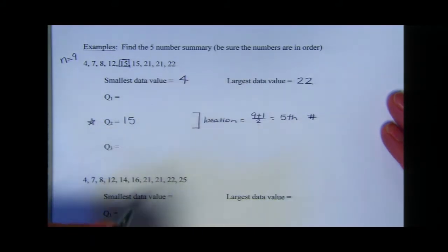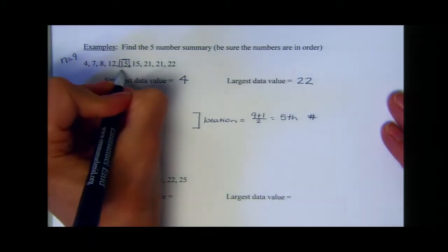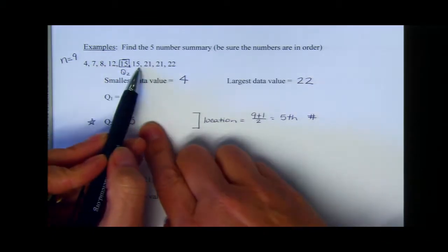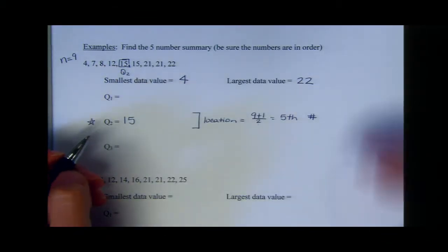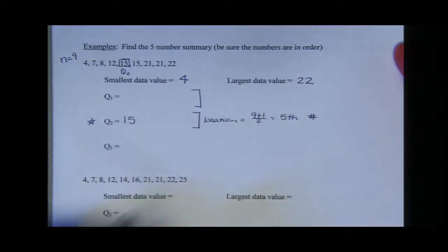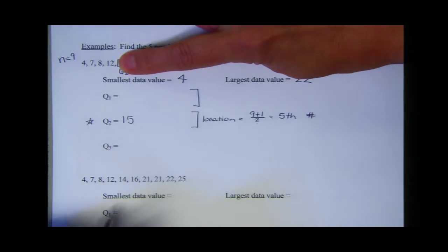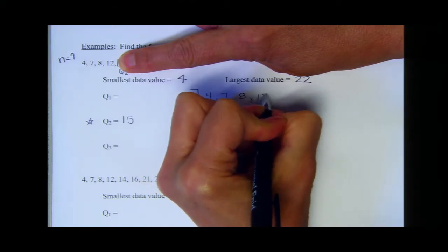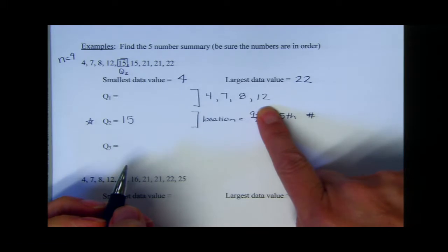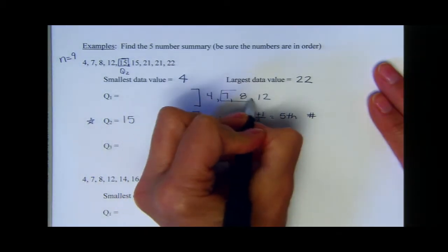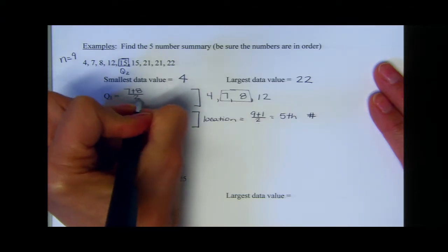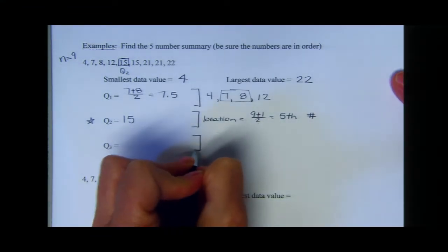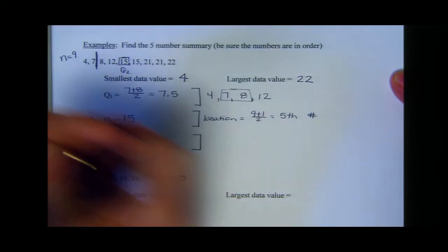15 is quartile two, and it cuts the data in half. To find quartile one, we use all the numbers that fall below quartile two: four, seven, eight, and twelve. We locate the median of these four numbers, which is seven plus eight divided by two, giving us 7.5. So quartile one is 7.5.